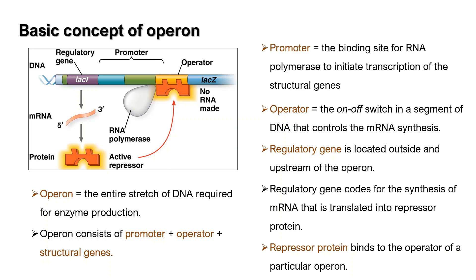Let us look at the basic concept of operon. Operon is the entire structure of DNA that is required for enzyme production. Operon consists of a promoter and operator as well as structural genes. The promoter is the binding site for RNA polymerase to initiate transcription of structural genes. The operator is the on and off switch — a segment of DNA that controls the mRNA synthesis.